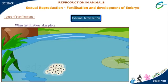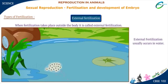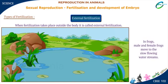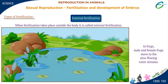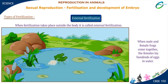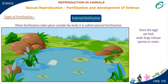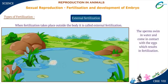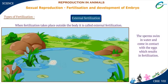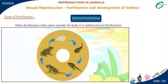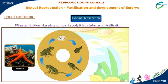When fertilization takes place outside the body, it is called external fertilization. Usually, it occurs in water. For example, in frogs, male and female frogs move to slow-flowing water streams. When they come together, the females lay hundreds of eggs in water. Once the eggs are laid, male frogs release sperms in water. The sperms swim and come in contact with the eggs, which results in fertilization. External fertilization is also observed in starfish and fishes.